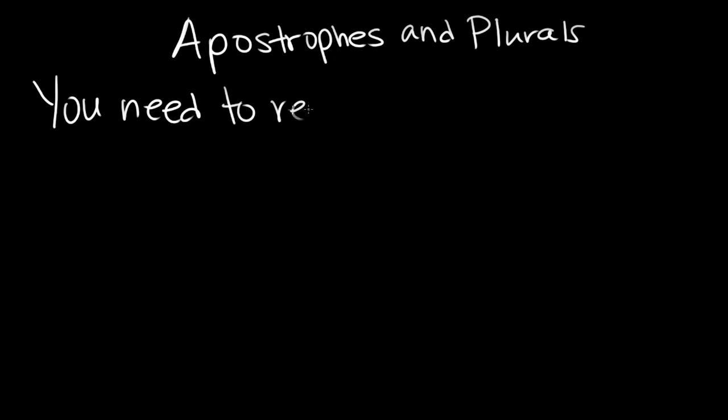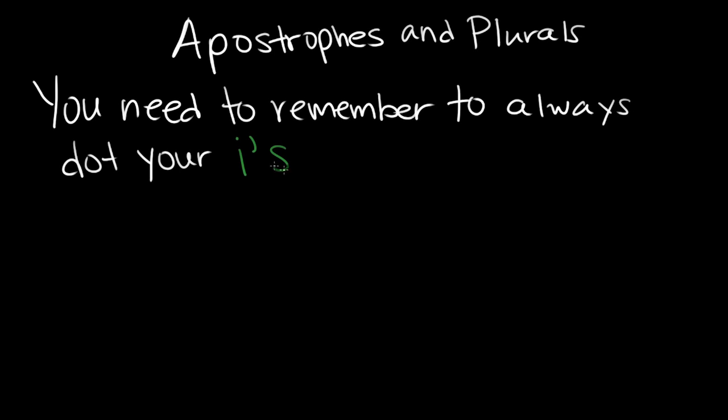So if you're saying something like, you need to remember to always dot your i's, where you're talking about the letter i and there are several of them, you're going to put an apostrophe before the s. And that's to prevent it from looking like "is," right? Because if we didn't have that apostrophe in there, it would just be the word "is." There's no way to tell i's from the word "is" in that case. So this apostrophe can look like it's making the letter i possessive, but it's really just there to make it clear that this is plural i and not "is."